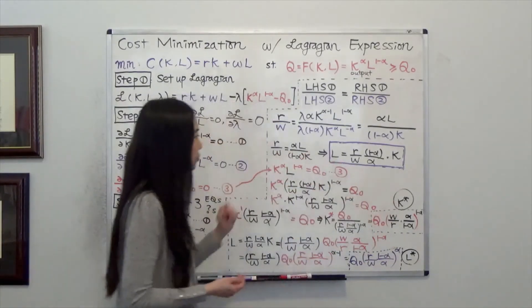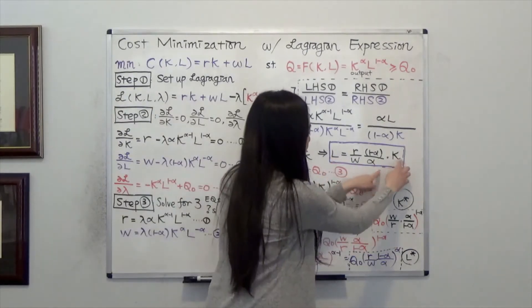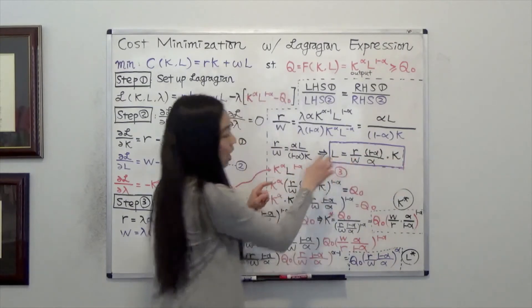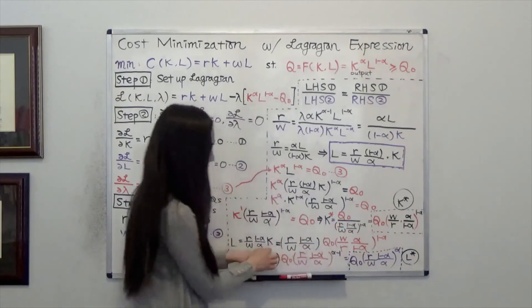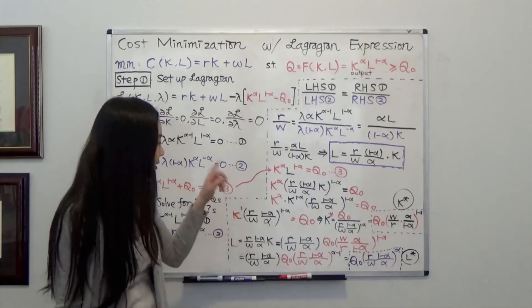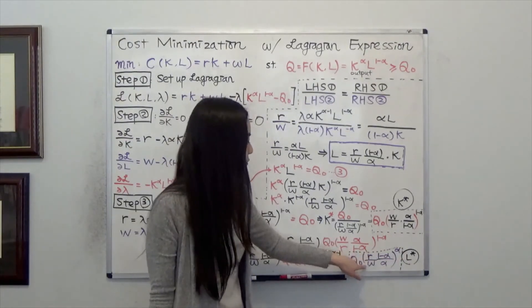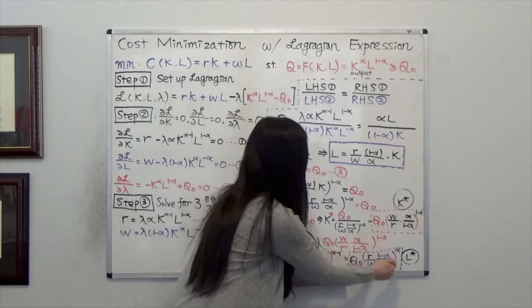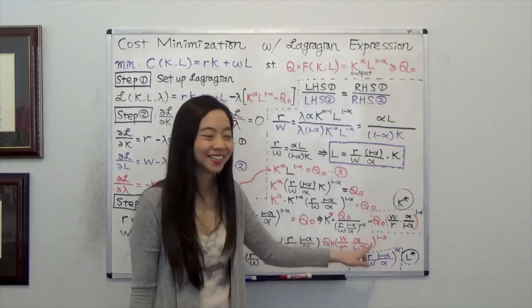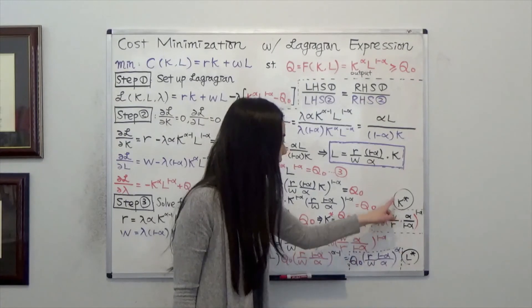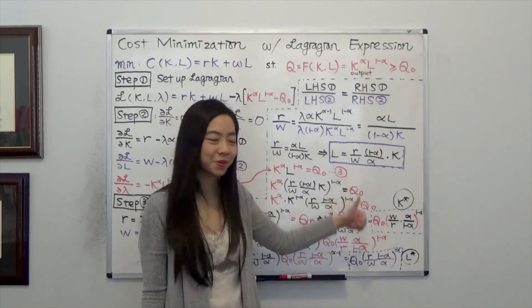After finding K star, we solve for the optimal amount of labor. Since labor is a function of capital, L equals R over W times (1 minus alpha) over alpha times K, I plug K star into this expression. After some calculation, L star — the optimal amount of labor — is equal to Q0 times R over W times (1 minus alpha) over alpha, the whole thing to the power of alpha. The demand for labor also follows the law of demand: when the wage rate goes higher, demand for labor goes down. Also, labor and capital are substitutes — when the price of capital R goes up, you hire more labor.